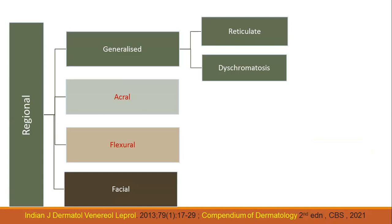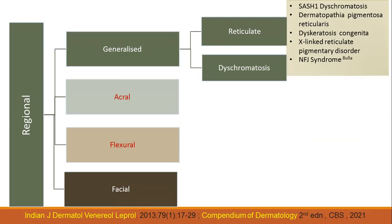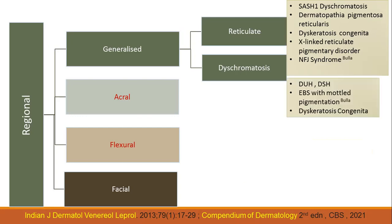In the true reticulate disorders, you have the SARS-1 dyschromatosis — SARS-1 is basically a gene defect, not easy to diagnose clinically. These patients usually have lentigines on their face and dyschromatosis on the body. Of course, dermatopathia pigmentosa reticularis, dyskeratosis congenita, X-linked reticulate pigment disorder which has MLA deposition, and the Naegeli-Franceschetti-Jadassohn syndrome which has bullae. Those conditions that are generalized with dyschromatosis — hyper and hypo — include dyschromatosis universalis heredaria, the acral variant, EBS with mottled pigmentation, and dyschromatosis colinita.